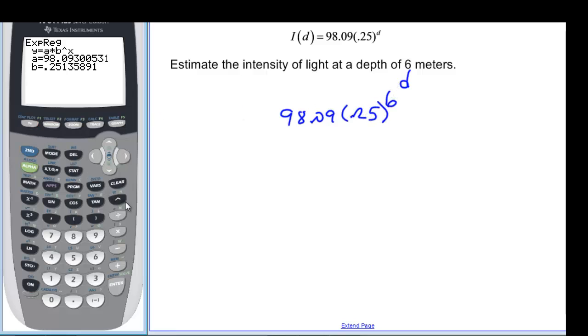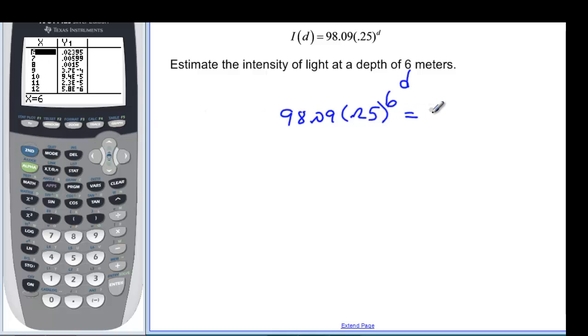And if I put my equation in here, and then second window again will let me tell it what X I want. I want it to be 6. And when we plug that in, we find out that it's 0.02. And remember, this is a percent light at 6 meters. At the 6 meter depth.